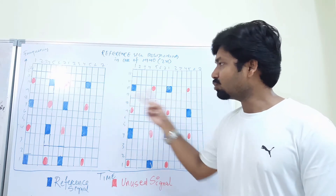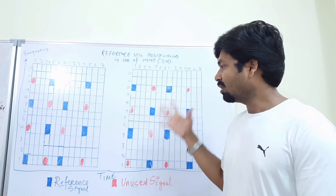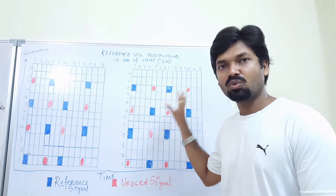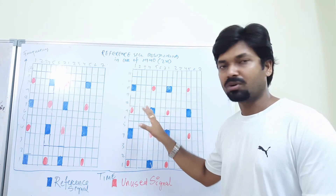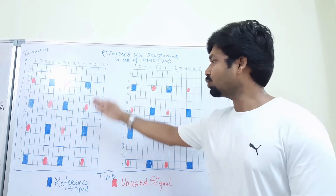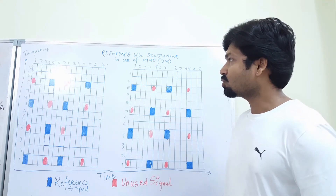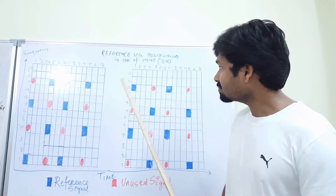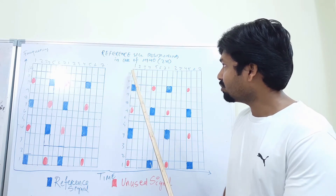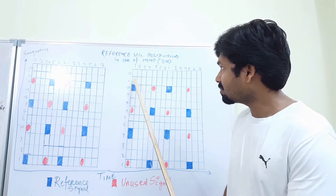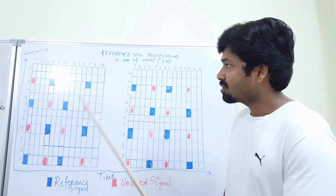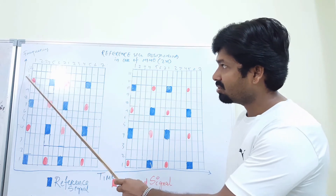Now we see in case of MIMO, or 2x2 MIMO — that means we are having two different antenna ports where logically we have one scheduling block or one resource block, but we are sending this block through two different ports. Let's say I am transmitting here at the first symbol of the third subcarrier or the tenth subcarrier.